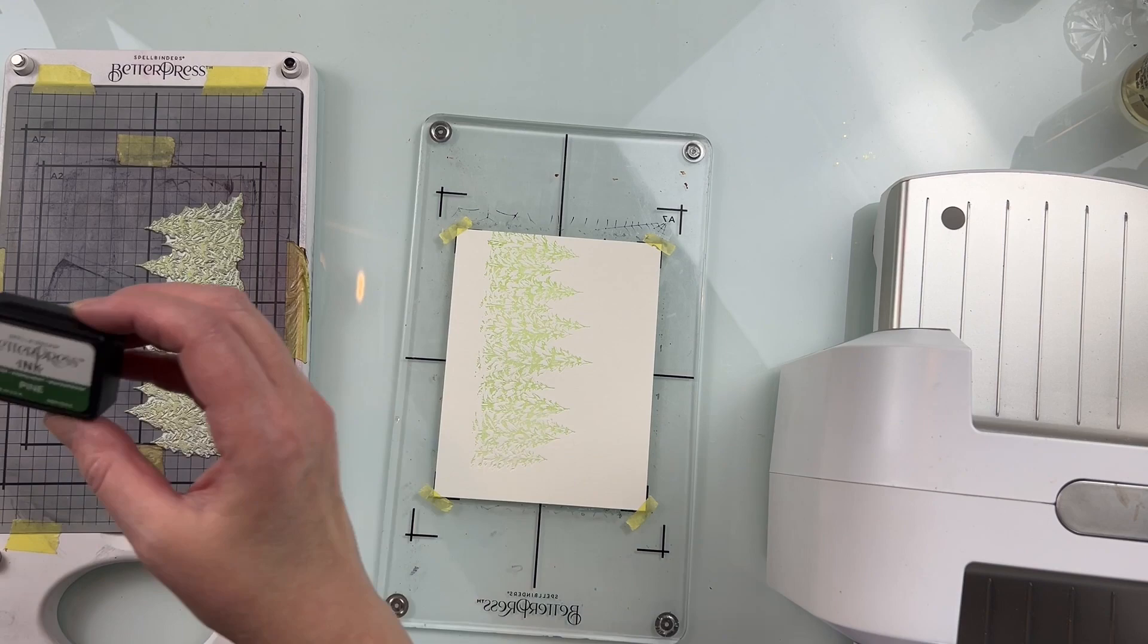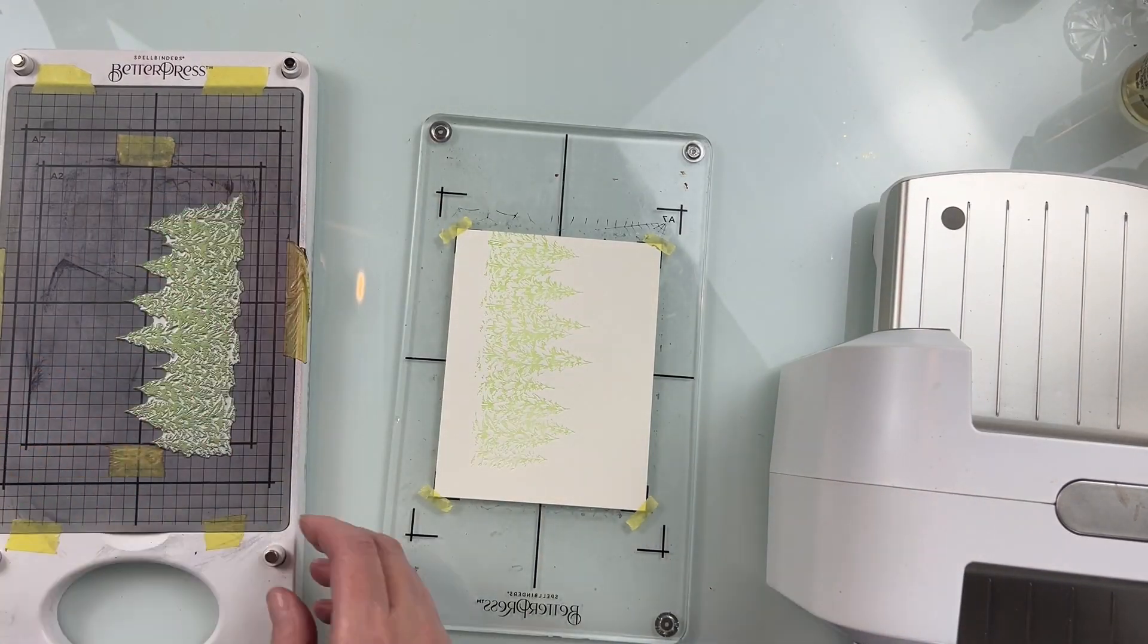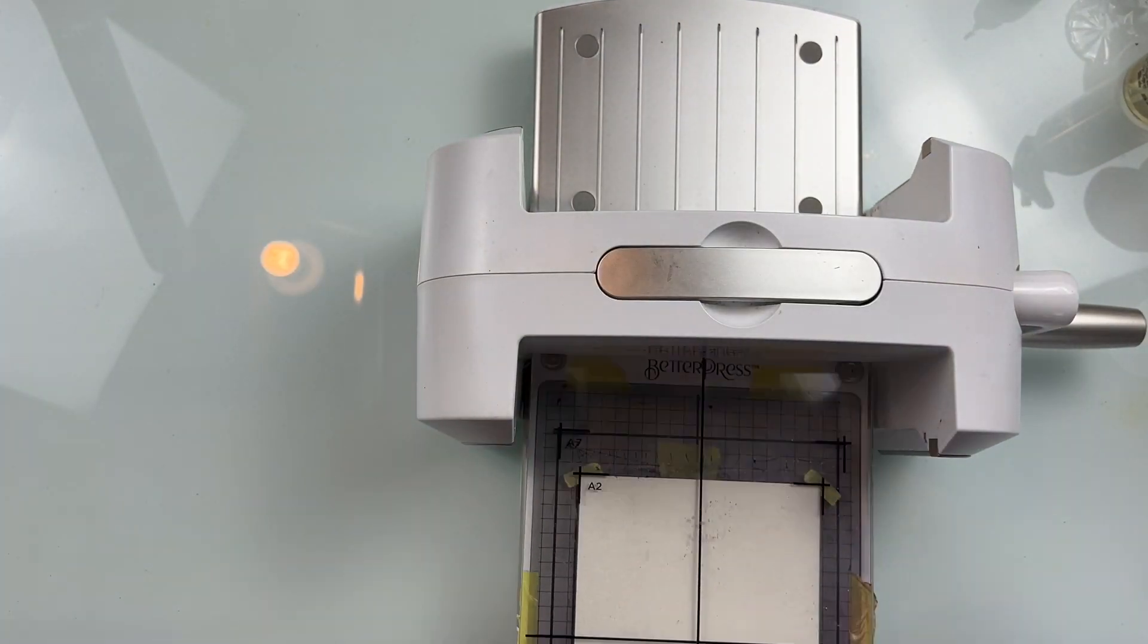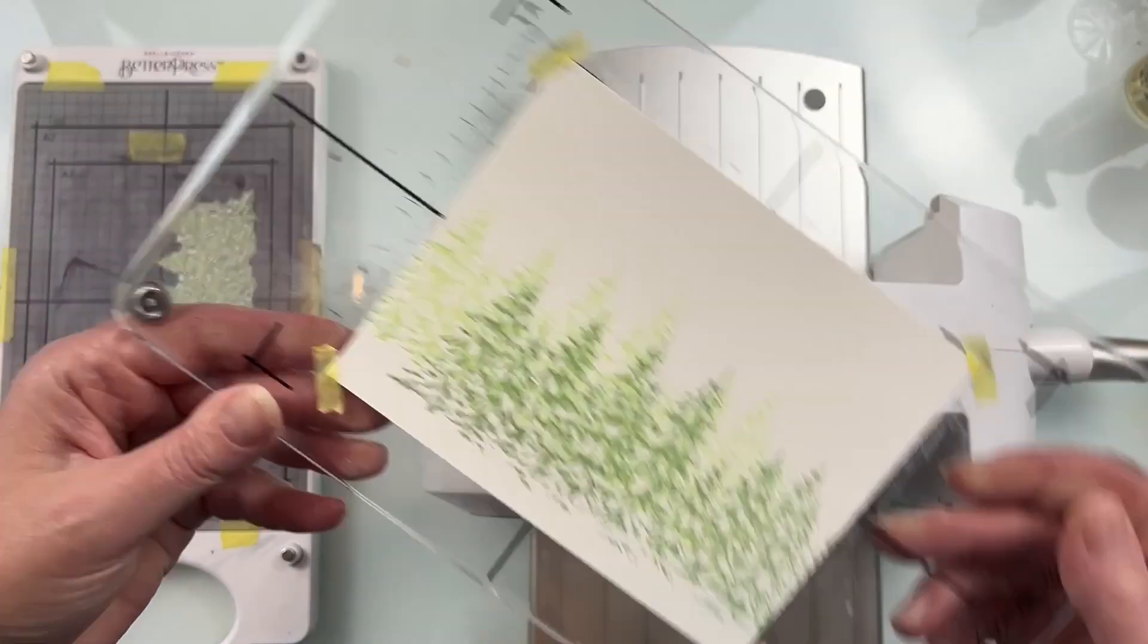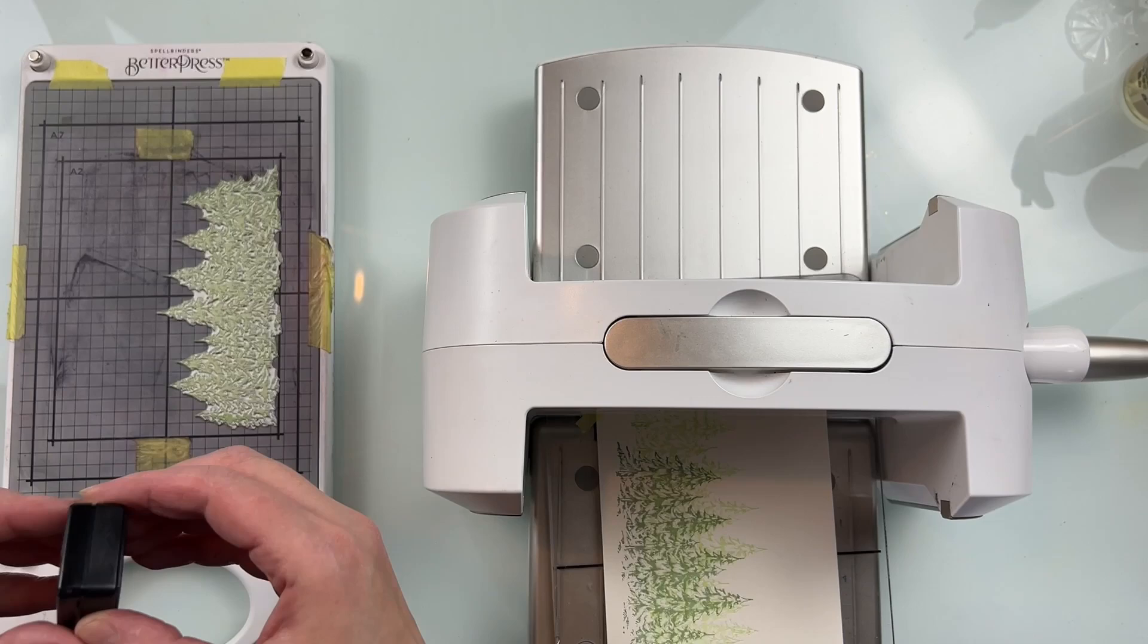I'm moving my plate on my Better Press base before inking it with a darker color and then pressing again. I do this three times with three different greens to create a cluster of trees, and I love how full it makes it look.